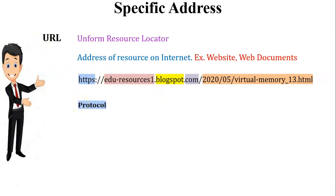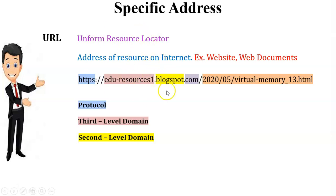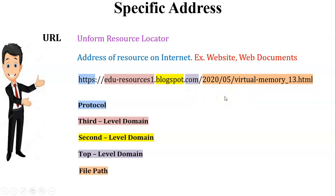Let us see the parts of a URL. The first part is the protocol — HTTPS. The next part is the third-level domain, for example 'edu-resources1'. After that is the second-level domain, for example 'blogspot'. Then comes the top-level domain, here '.com', which means commercial domain. After the top-level domain, the remaining part is the file path, where the file is stored on the server. So a URL is made up of five parts: protocol, third-level domain, second-level domain, top-level domain, and file path. The third-level domain is sometimes optional, but the second-level domain and top-level domain are present in every URL.